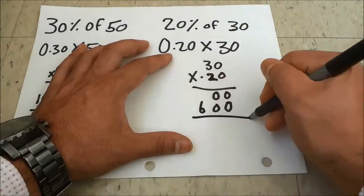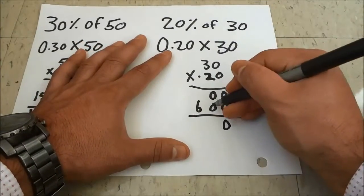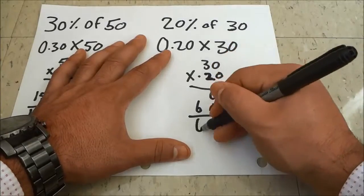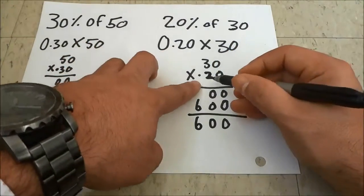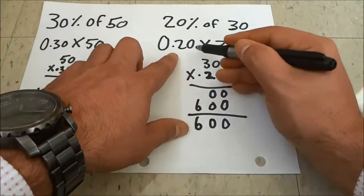Now I'm just going to add these two rows together. 0 plus 0 is 0, 0 plus 0 is 0, and 6 plus nothing is 6. Once again, because my decimal was two spaces from the right in the original number,